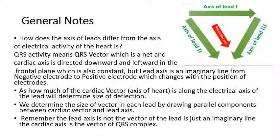What is the difference between the axis of the lead and the axis of the electrical activity of the heart? The axis of the electrical activity of the heart is expressed as a QRS vector — the net cardiac axis — which is the net of all vectors generated during the depolarization and repolarization of the heart. The cardiac axis is directed downward and leftward, and it is fixed or constant for all normal heart activities.